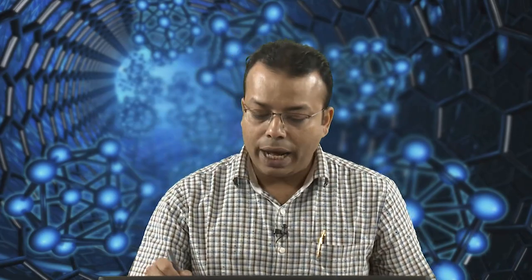Let us discuss what material properties we need when choosing materials for thermoelectric nanogenerators. It does not mean that any material will work as a thermoelectric nanogenerator — it should have certain criteria. The material should have a high Seebeck coefficient, low electrical resistivity, and low thermal conductivity. These three are the prime considerations for choosing any thermoelectric nanogenerator.